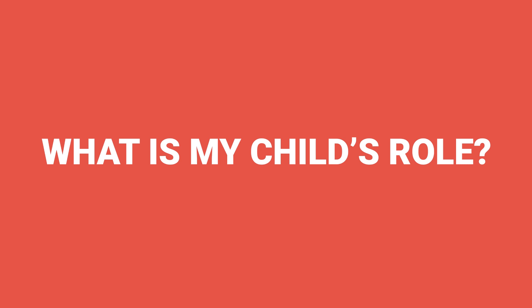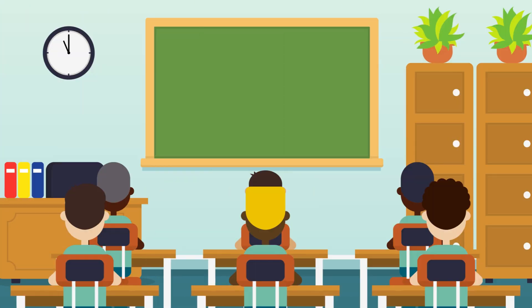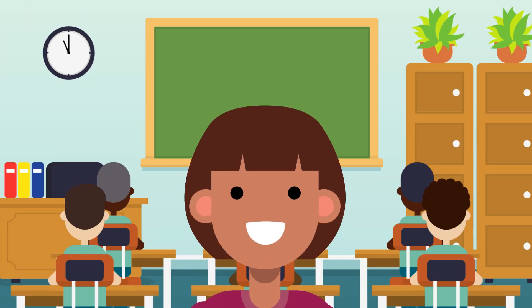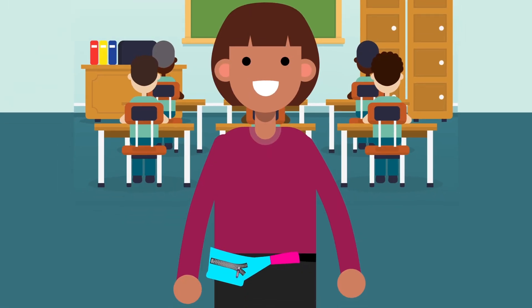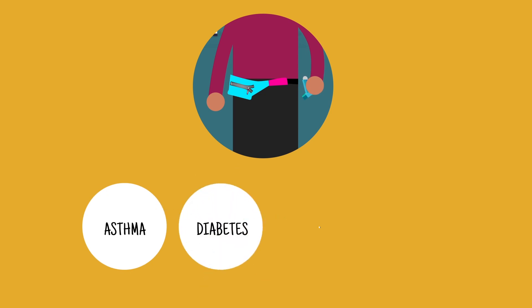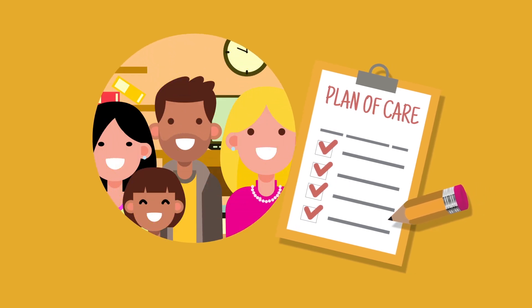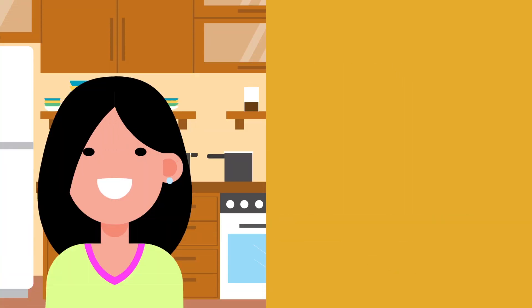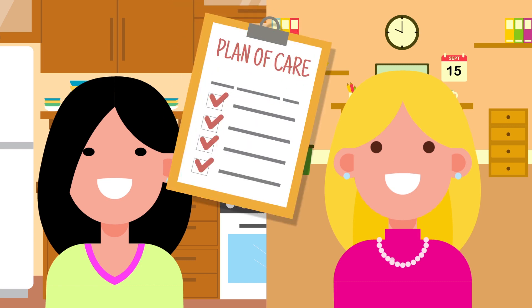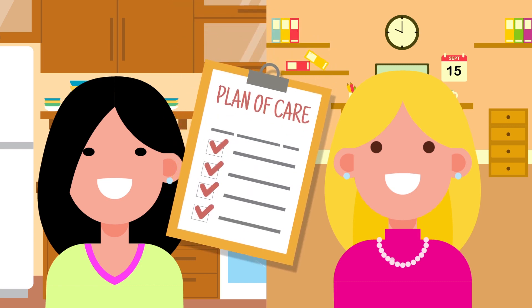Depending on your child's stage of development and their capacity to manage their medical condition, they may be able to carry out daily or routine activities related to their condition, such as checking blood sugar or using their inhaler. Encourage your child to be involved in developing their Plan of Care and to speak up to you and/or the principal if they have any difficulties at school or need further help.